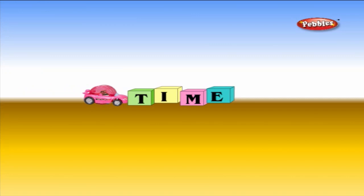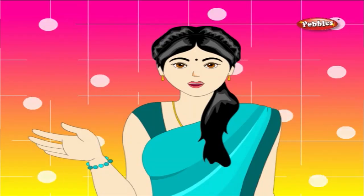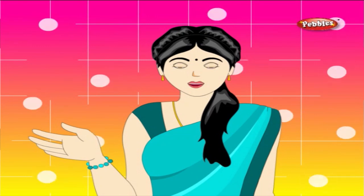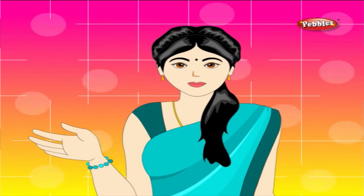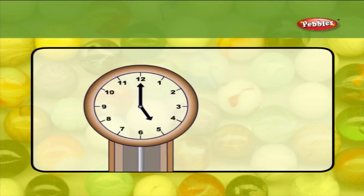Time. Now let us learn about a clock. The clock shows us the time of the day. Look at this clock. What do you see in the clock? Numbers from 1 to 12 and two hands pointing to the numbers. One hand is long and one hand is short.